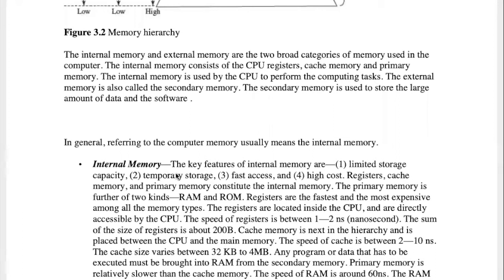We can see all the storage information at any time. We can easily identify four key points. Finally, we have examples of RAM, ROM, cache, and register — we can easily see these five points.